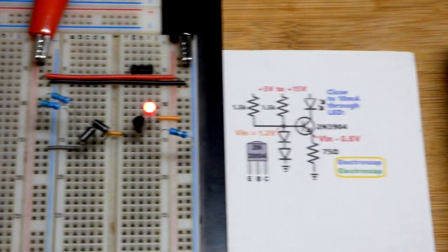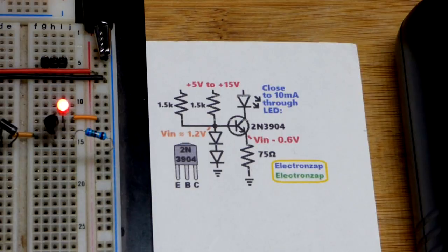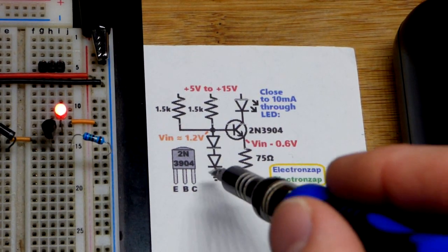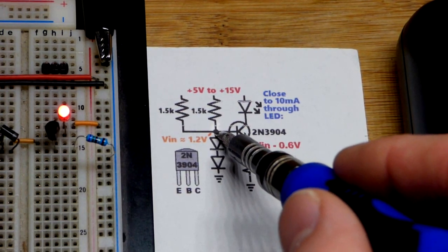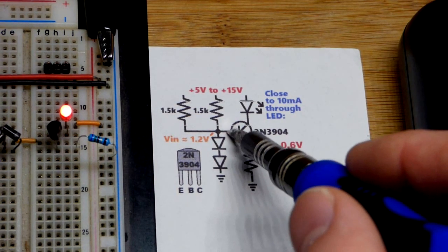So each one of them is going to build up about 0.6, 0.7 volts, something like that. So there's two of them to get probably about 1.2 volts approximately at the base right there.